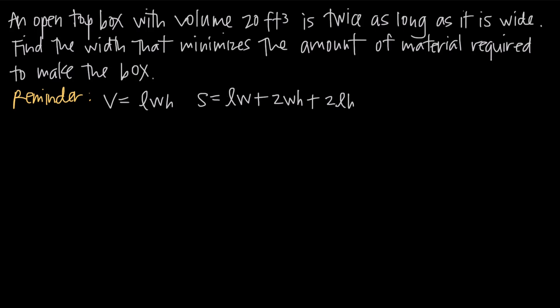In this video, we're going to be talking about applied optimization problems. In this particular problem, we've been told that an open top box — a box that has no top — with volume 20 cubic feet, is twice as long as it is wide. We've been asked to find the width of the box that minimizes the amount of material required to make it.